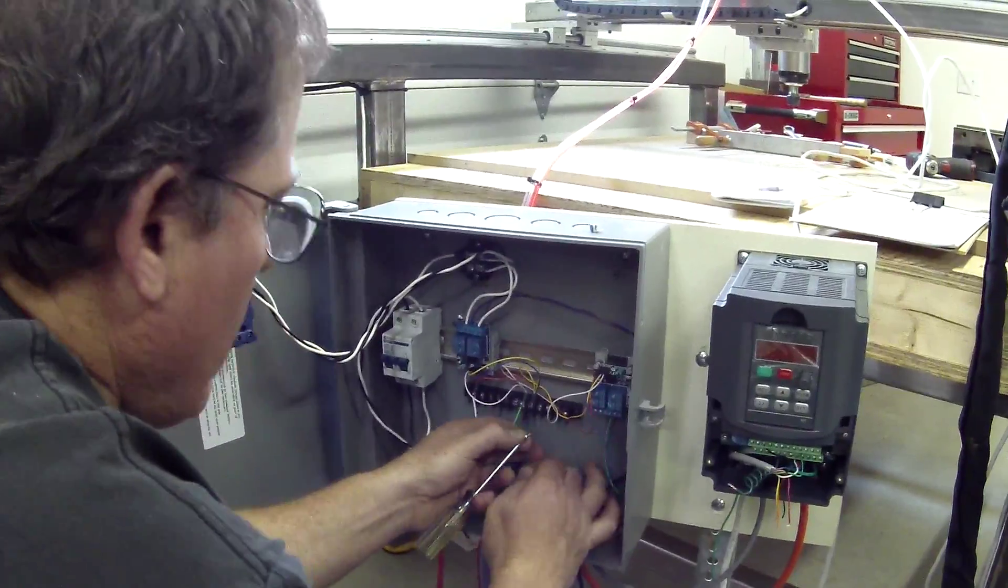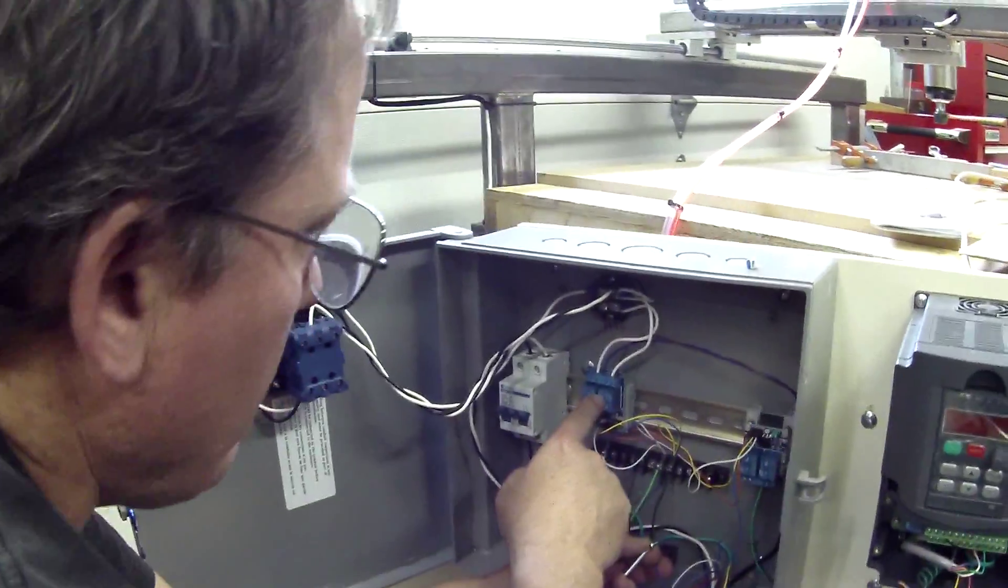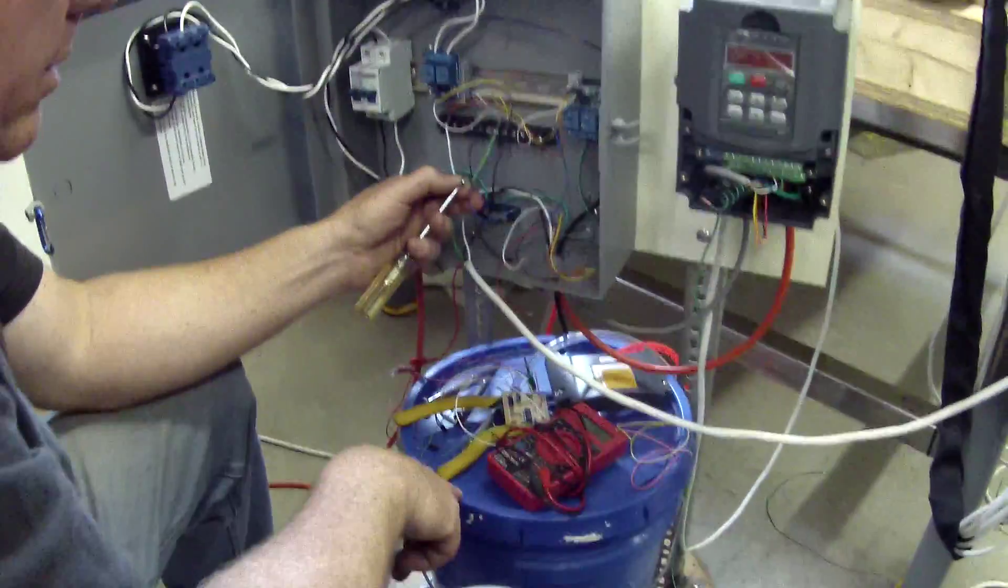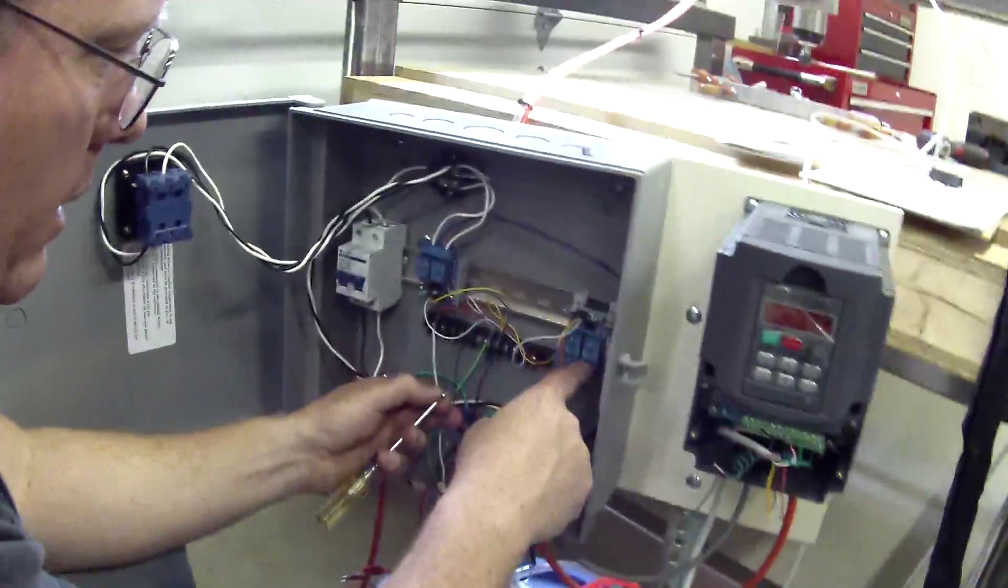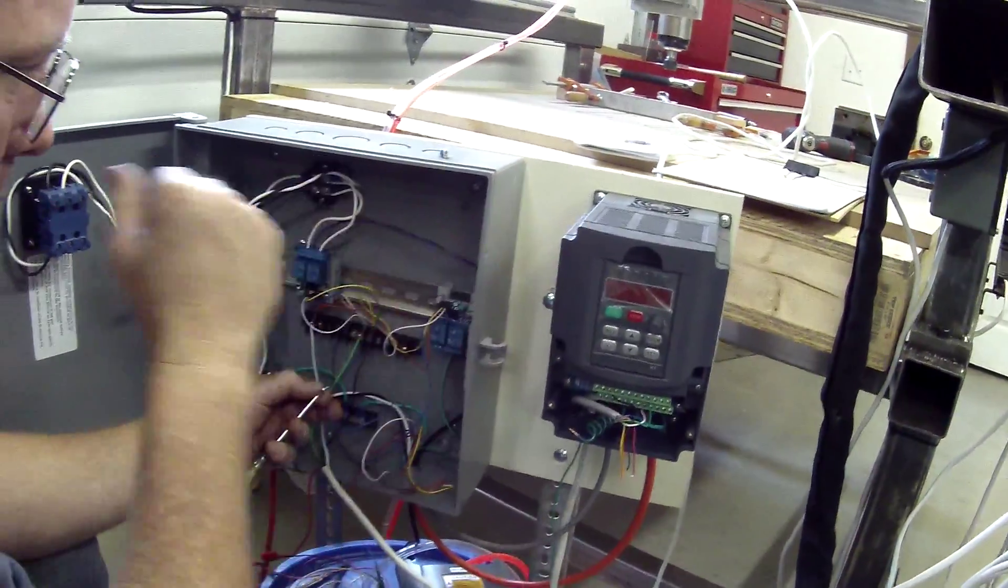The relays here and here. This relay here is driving a 220 volt pump that runs the coolant. And this relay on the right is actually what tells the controller to go into forward mode.